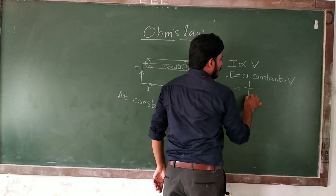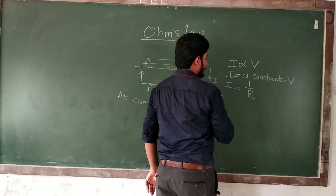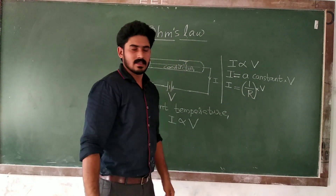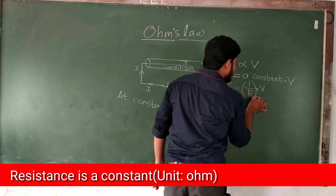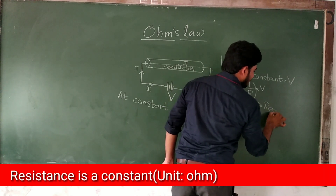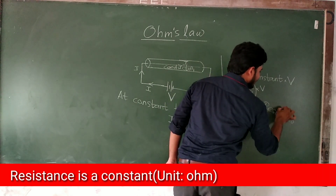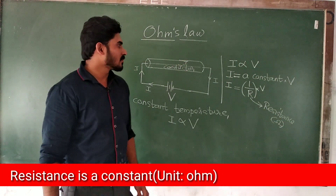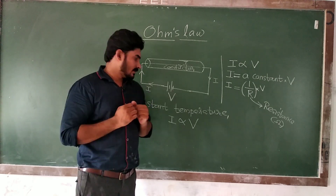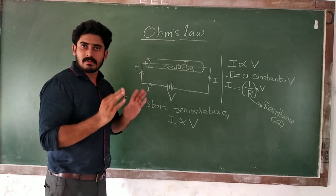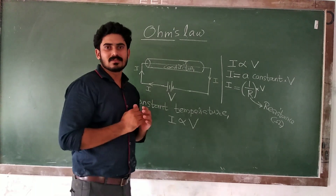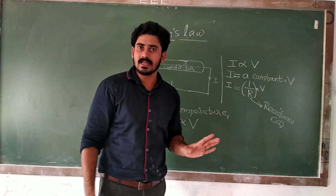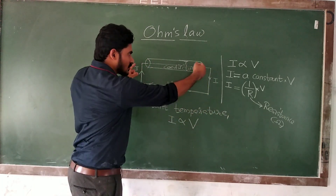This constant I am going to take as 1 by R. So the current equals 1 by R times V. This R is called resistance. The unit of resistance is Ohm. This is the current passing through a conductor is directly proportional to the voltage applied across the conductor, or between the two ends of the conductor.